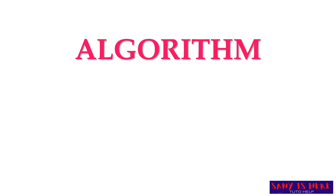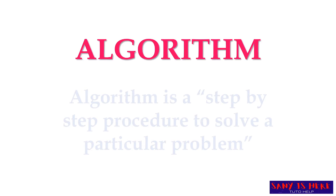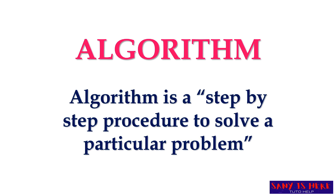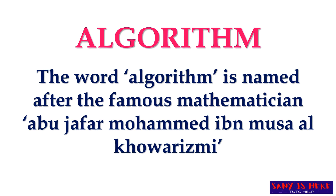That's why we are taking one of the problem solving techniques that is called an algorithm. Algorithm is basically a step to solve a problem. Algorithm is the technique which is used to solve a particular problem. It is a step by step procedure to solve a problem - when we solve a problem step by step it can be easily solved. The name algorithm is named after the famous mathematician Abu Jafar Muhammad ibn Musa Al-Khwarizmi.